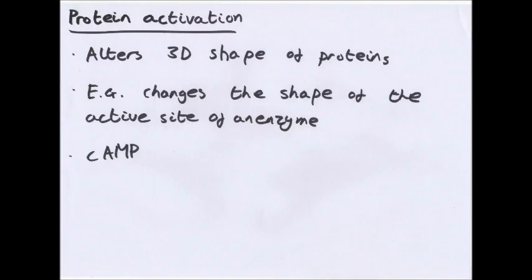Protein activation, very briefly, this is caused by cyclic AMP, or cAMP. Now, this can bind to some proteins, changing the 3D shape, and this can activate a protein, for example, with an enzyme, it might bind to the enzyme and cause the active site to open up so that it can actually accept the substrate. Just a very brief thing you need to know.